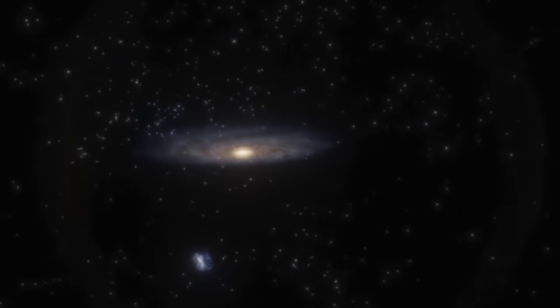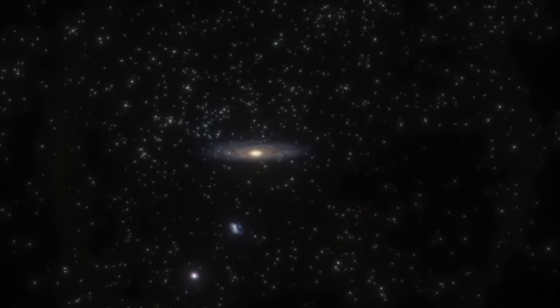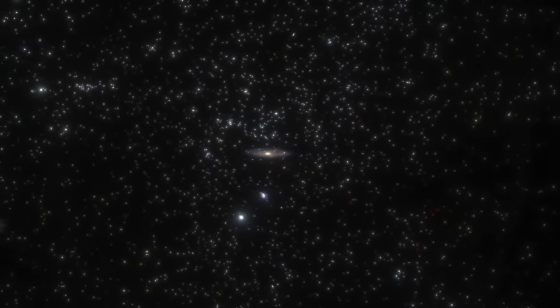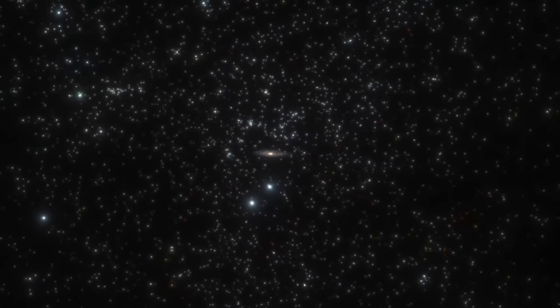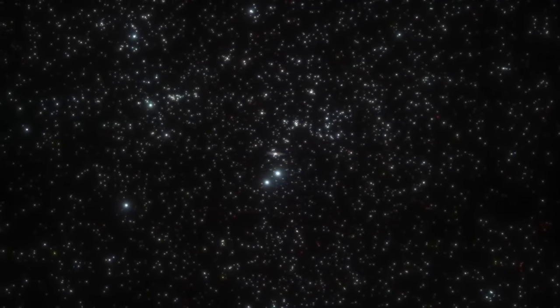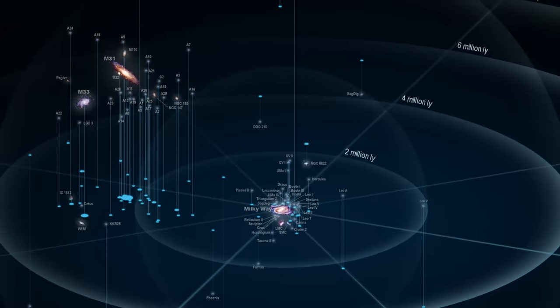As we leave the Milky Way, we enter the vast, almost incomprehensible realm of intergalactic space. Here, galaxies float in the cosmic ocean, separated by mind-boggling distances. Our galaxy is part of a small cosmic neighborhood known as the Local Group, a cluster of more than 50 galaxies spread across approximately 10 million light-years.